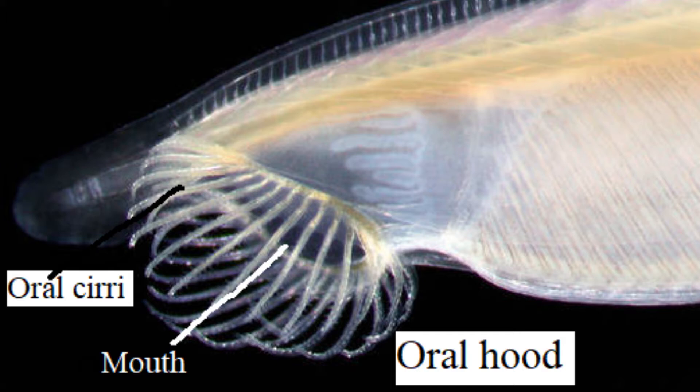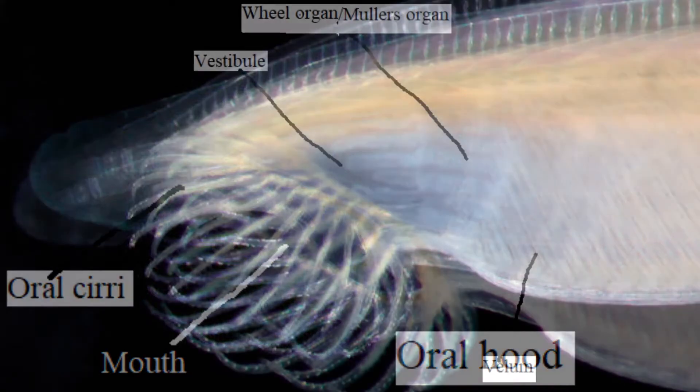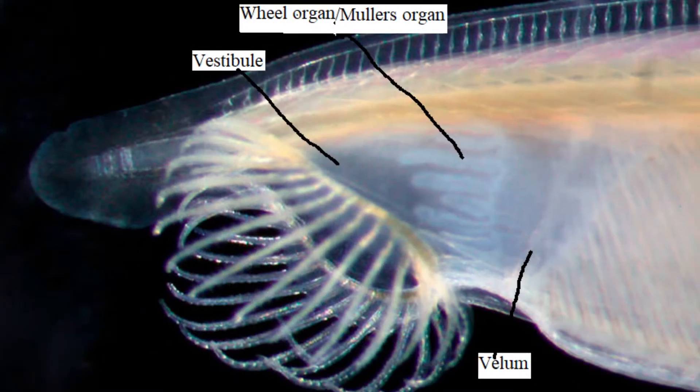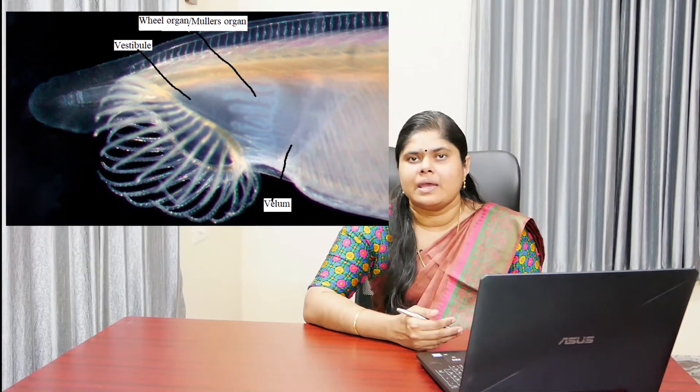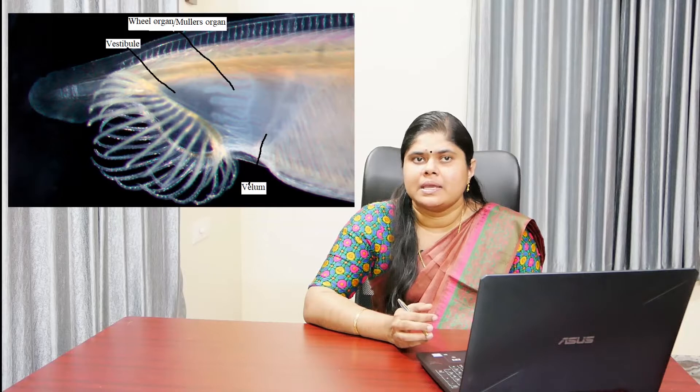Their number increases with age, and the buccal cirrhae and the edge of the oral hood are internally supported by stiff gelatinous skeletal rods. The buccal cirrhae form a sieve or filter to prevent the entry of larger particles. The oral hood encloses a large funnel-shaped cavity called the buccal cavity or vestibule, into which opens the mouth. As this cavity is lined with ectoderm, it is regarded as stomodeum, and its external opening is considered the true mouth.